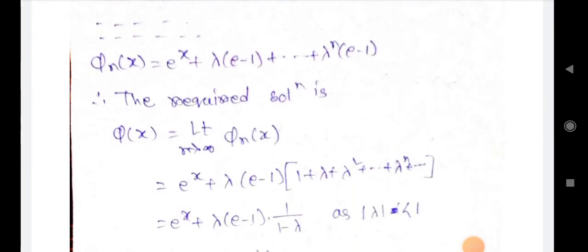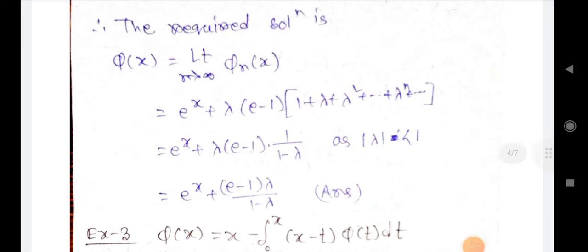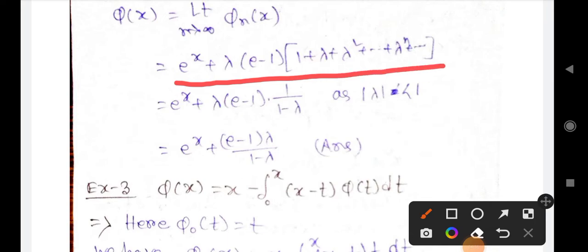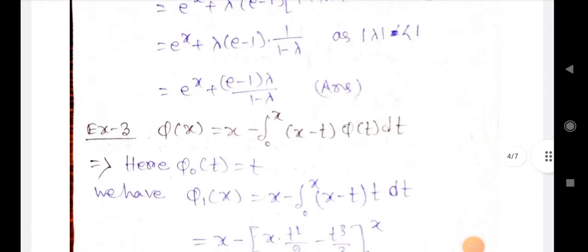Similarly, we get φₙ(x) = eˣ + λ(e-1) + λ²(e-1) + ... + λⁿ(e-1). The required solution is φ(x) = lim(n→∞) φₙ(x) = eˣ + λ(e-1)·(1 + λ + λ² + ... to infinity). These values equal eˣ + λ(e-1)·(1/(1-λ)) for |λ| < 1, giving eˣ + (e-1)λ/(1-λ). This is the answer.